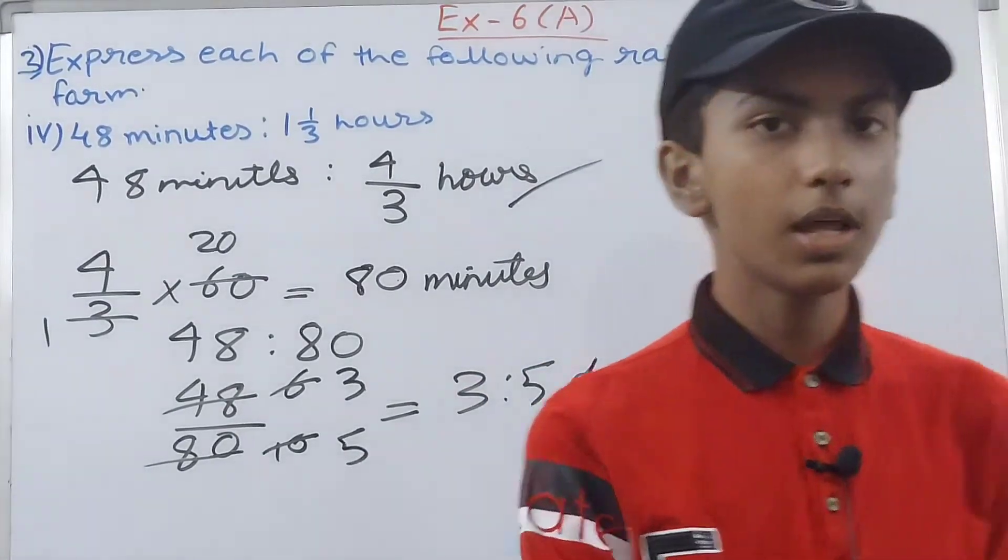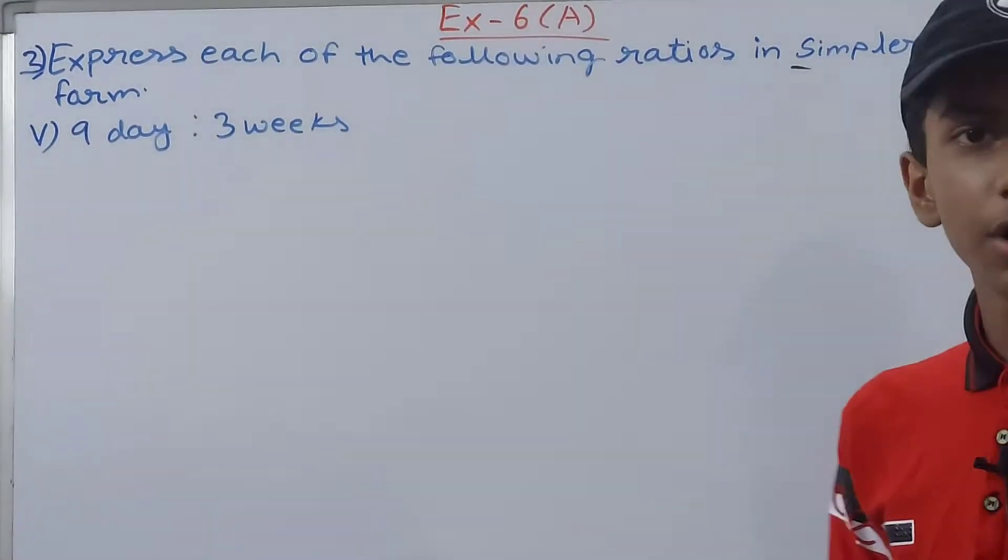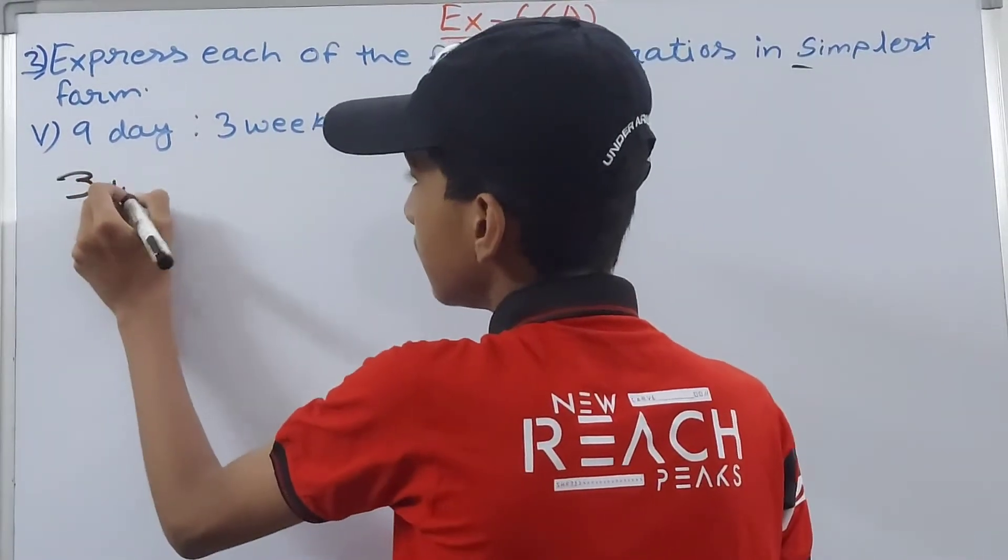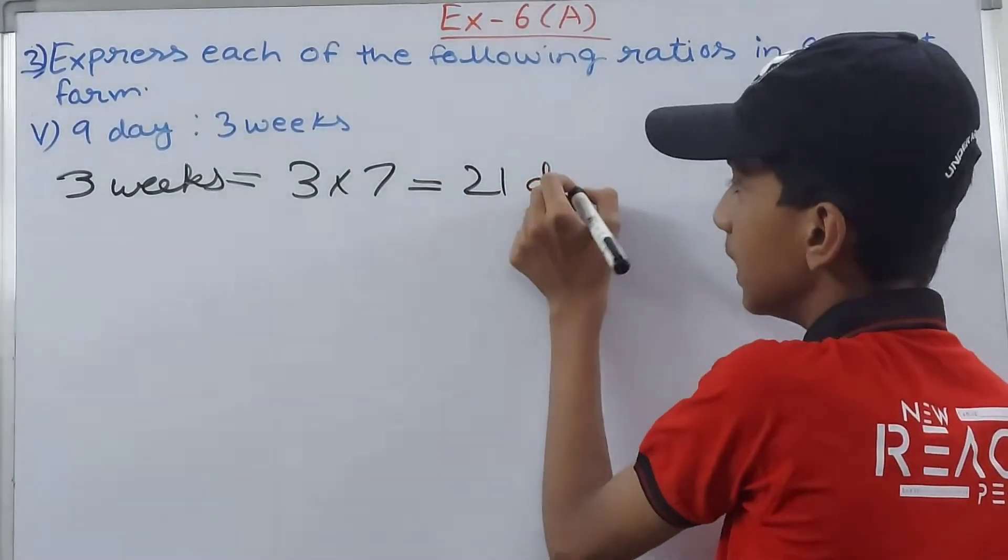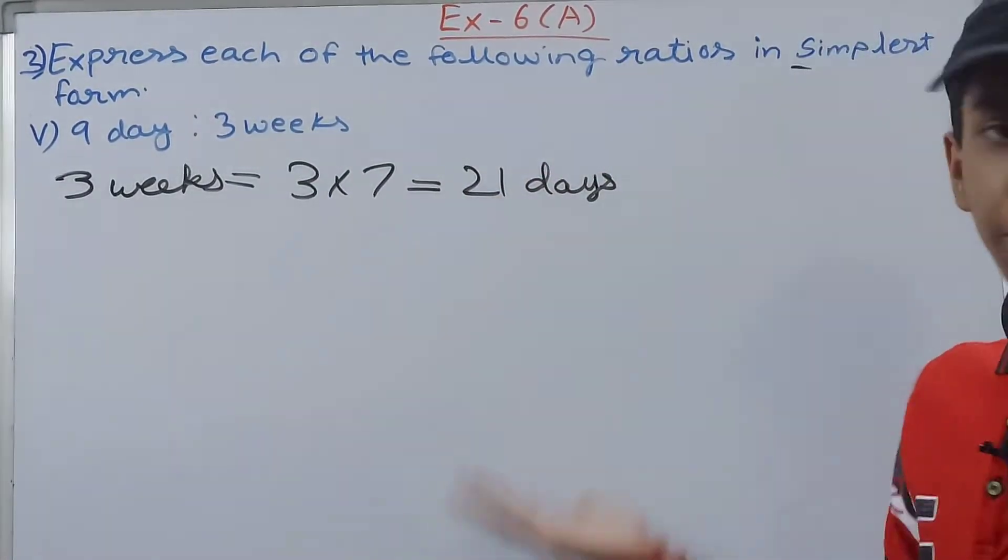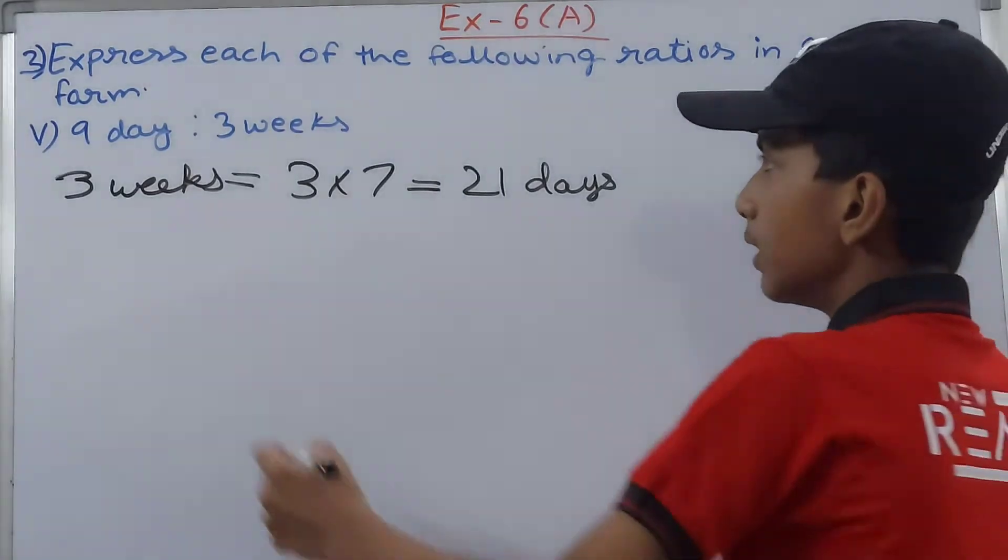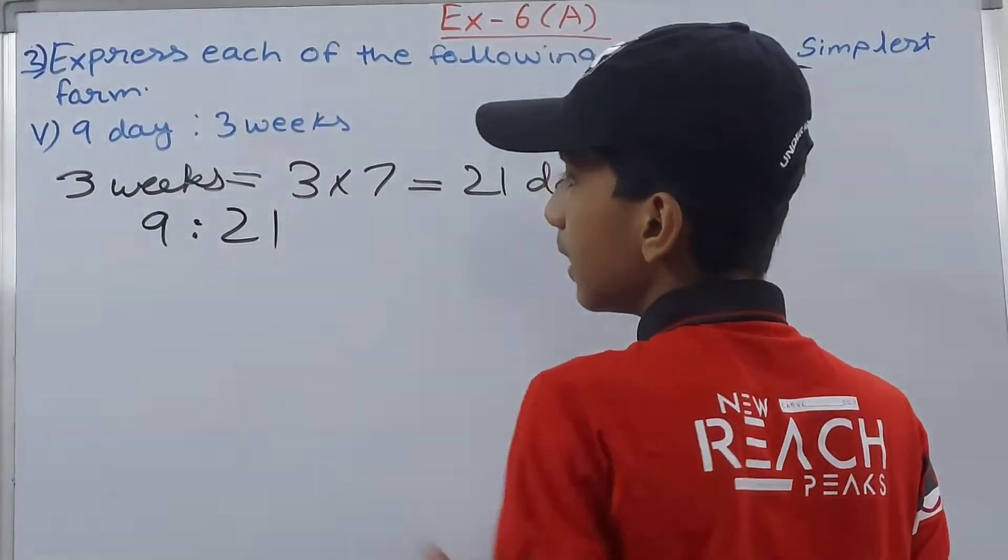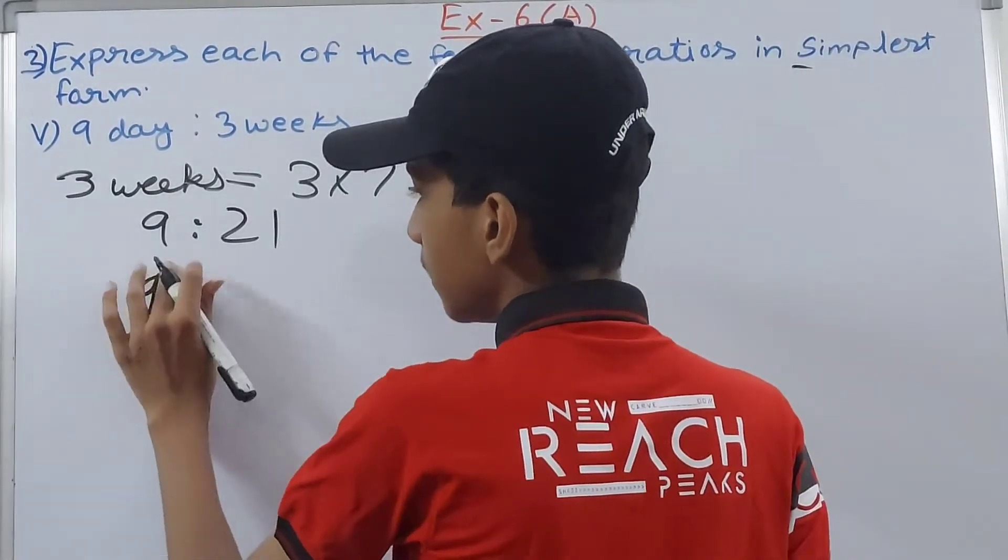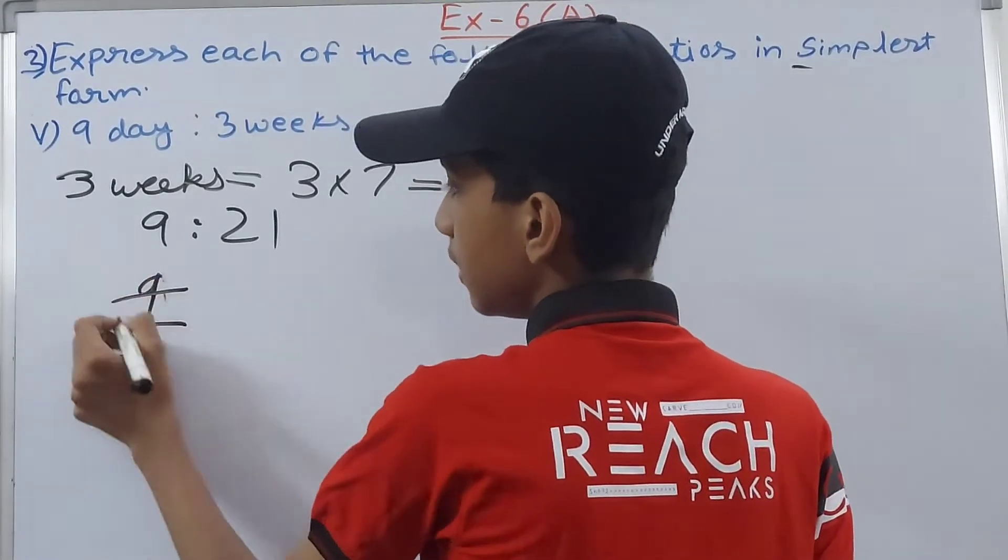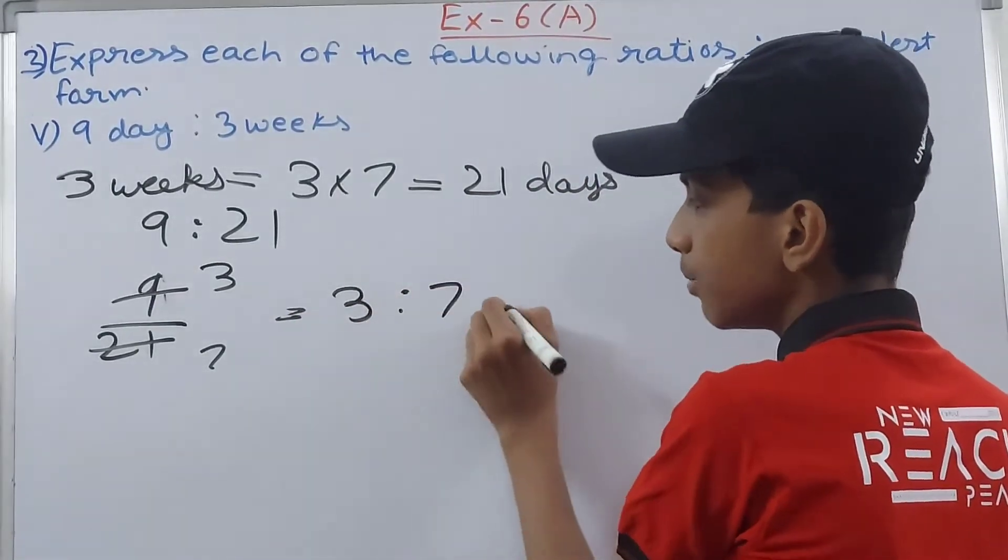Next one is 9 days is to 3 weeks. Weeks will be converted into days, so 3 weeks equals 3 into 7, which is 21 days. Now 9 days is to 21 days. Write it as 9 is to 21. Can we simplify this? Yes, 9 upon 21 by 3 gives us 3 and 7. So we will have 3 is to 7. This becomes our answer.